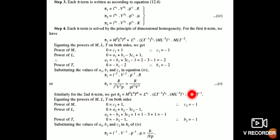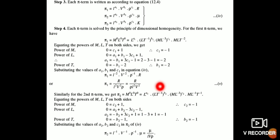For π2 = L^a2 · V^b2 · ρ^c2 · μ, with μ having dimensions ML⁻¹T⁻¹. Equating powers of M: c2 = −1. Equating powers of T: b2 = −1. Equating powers of L: a2 = −1. Therefore π2 = μ / (LVρ).